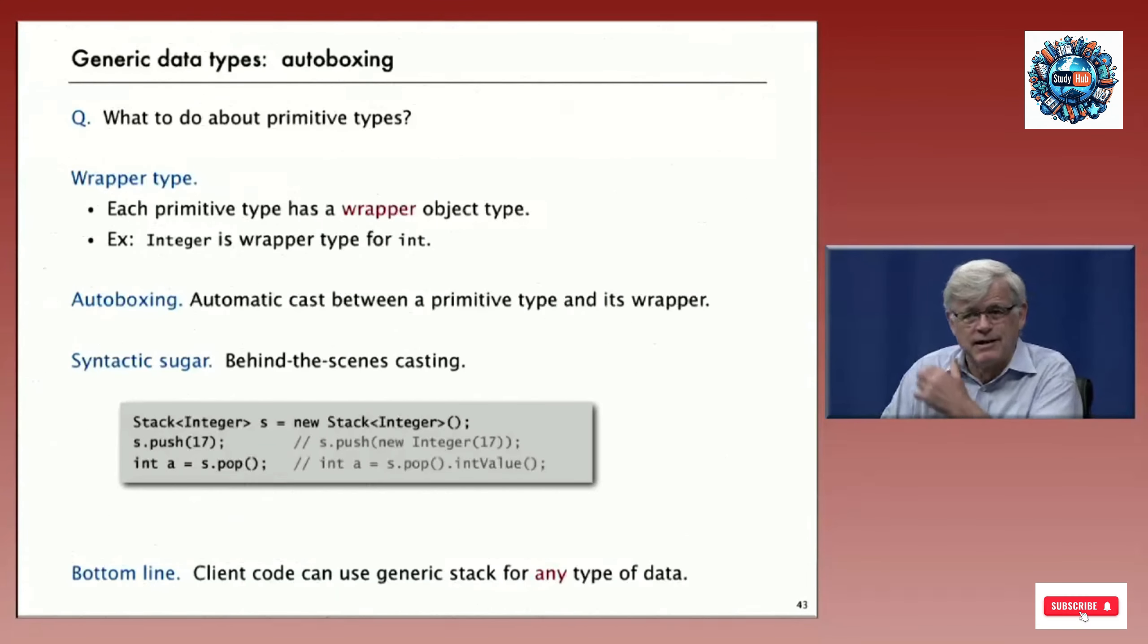There's one other detail that Java takes care of - what about primitive types? The generic type that we're using is for objects and we're casting down from array of objects. In order to handle generic types, we have to use Java's wrapper object types. Integer with a capital I is wrapper type for int and so forth. There's a process called autoboxing which automatically casts between primitive types and wrappers.